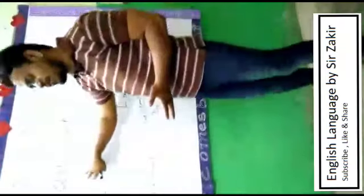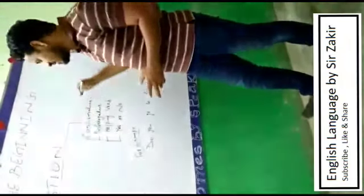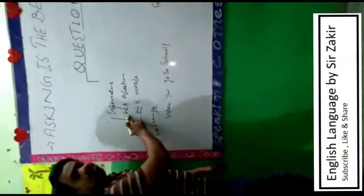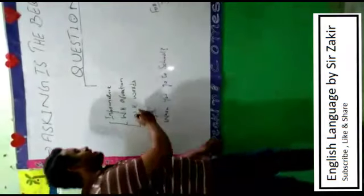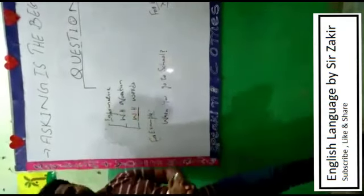So what are the types of questions we have? We have confirmative questions, and we have informative WH questions. In informative questions, some information is missing, so we cannot call them yes/no questions. They start with WH words.